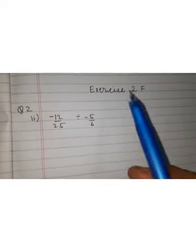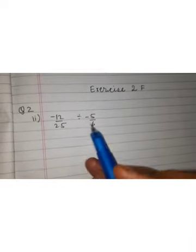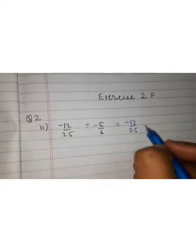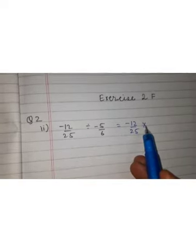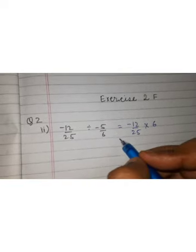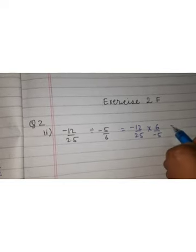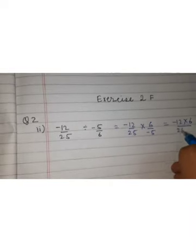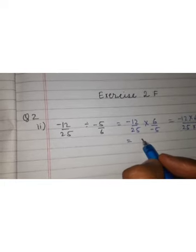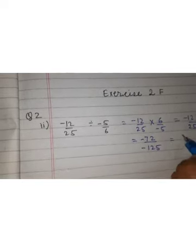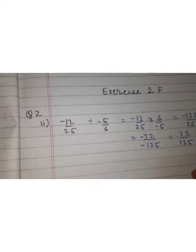So to summarize: when we have to divide, we take the second rational number (the one written after the division sign), find its reciprocal, and change the division sign to multiplication. Let's look at exercise 2F question 2, second part: −12/25 ÷ (−5/6). We keep −12/25, change division to multiplication, and the reciprocal of −5/6 is 6/−5. This gives (−12×6)/(25×−5) = −72/−125. Minus and minus cancel, so the answer is 72/125.